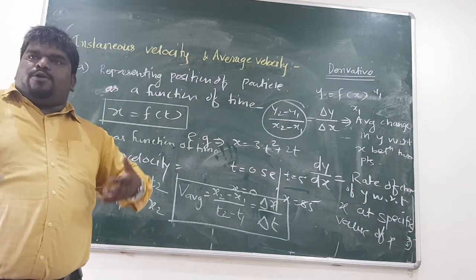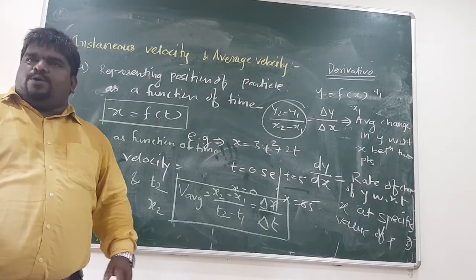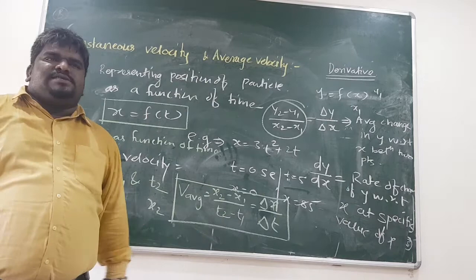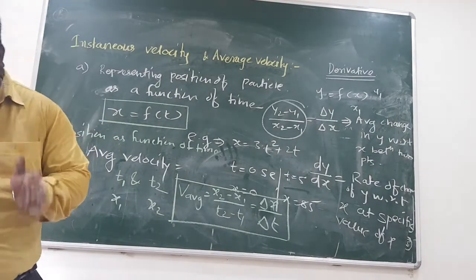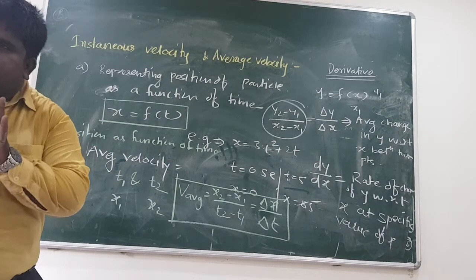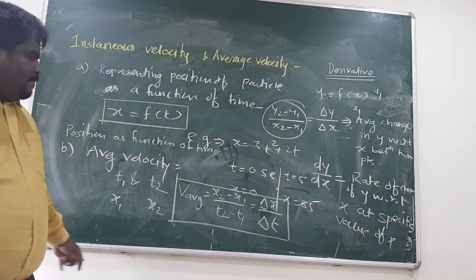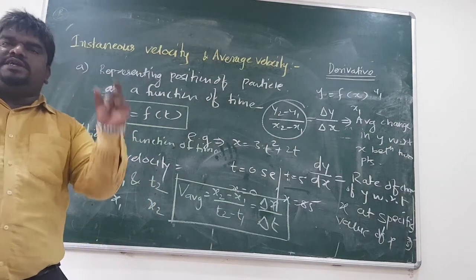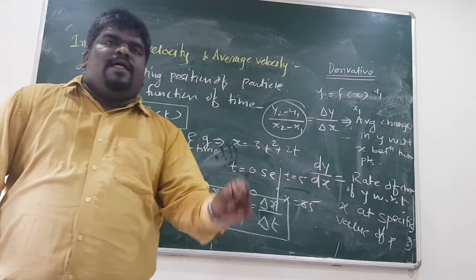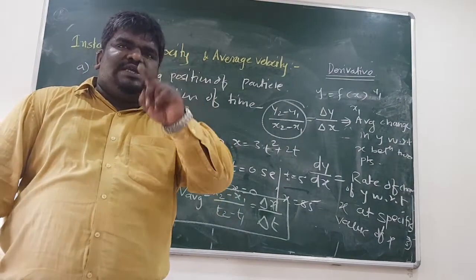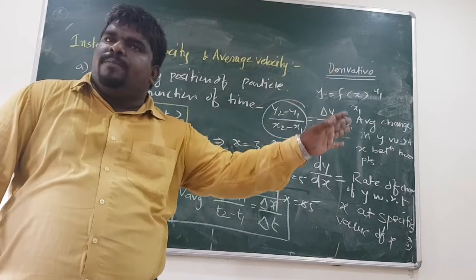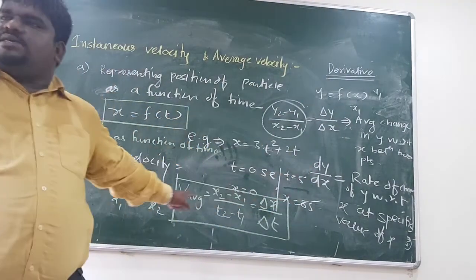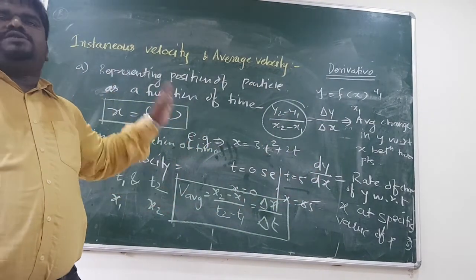This is the definition of average velocity now for us. Because we are grown up, we are not in class 9 to say only displacement by time is average velocity — that is also a basic definition — but this is the more accurate definition. Average velocity is always found between two points t1 and t2, so delta x by delta t gives us average velocity.